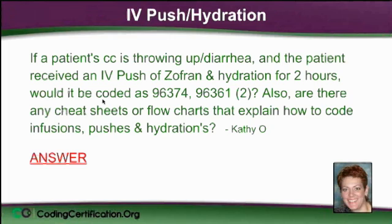If a patient's chief complaint is throwing up and diarrhea, and the patient received an IV push of Zofran and hydration for 2 hours, would it be coded as 96374 — that's for the IV push — and 96361 times 2? Also, are there any cheat sheets or flowcharts that explain how to code infusions, pushes, and hydrations?